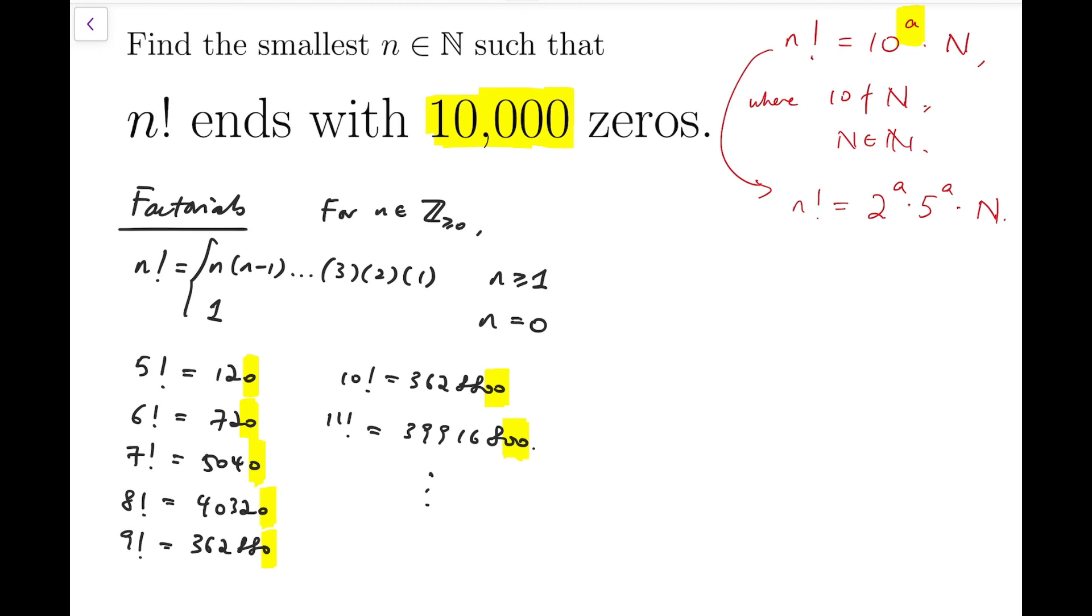Now here comes the question. When we try to decompose n factorial, as in we consider the form 1 times 2 times 3 all the way up to n, you should know that the even factors, say 2, 4, 6, 8, 10, and so on, there are lots of sources that will contribute factors of 2.